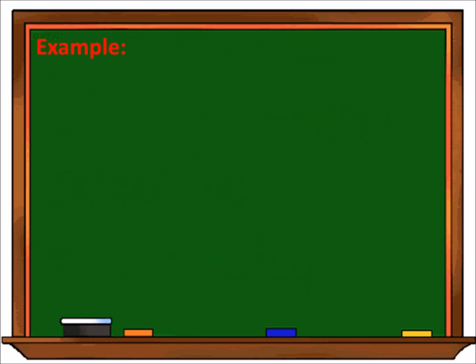Let's try another example. Number 1: positive 5 plus positive 3. Gagawin lang natin ay kukopihin natin yung sign dahil magkapareha sila — positive — at i-add lang natin yung absolute value ng dalawang integers. Kaya ang sagot natin ay positive 8. Number 2: positive 15 plus positive 8 is equal to positive 23. Copy yung sign at i-add lang natin yung absolute value.